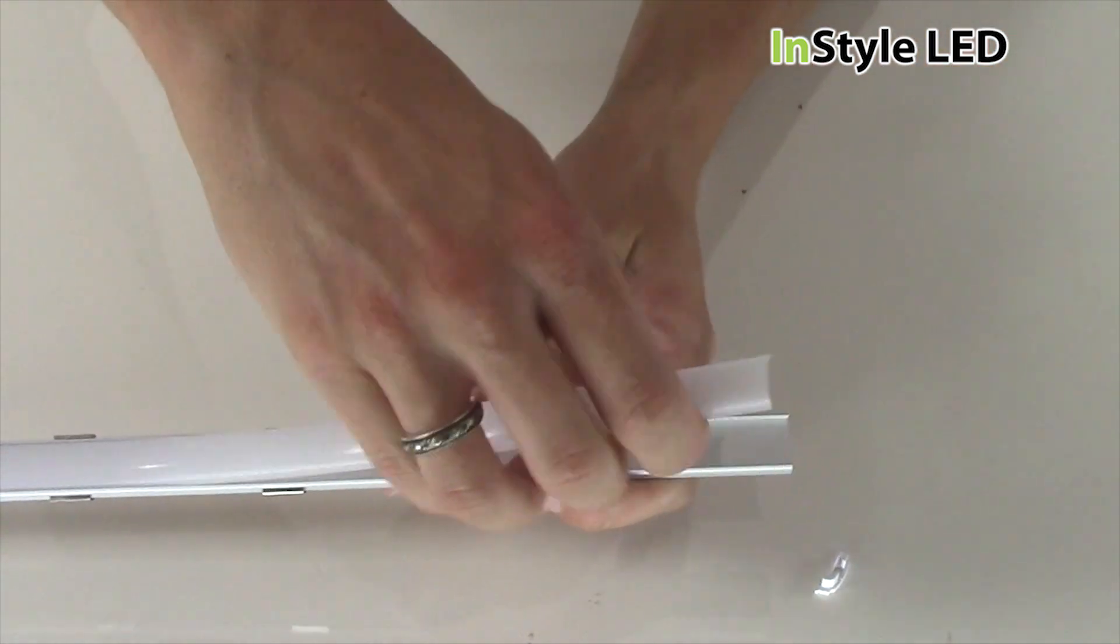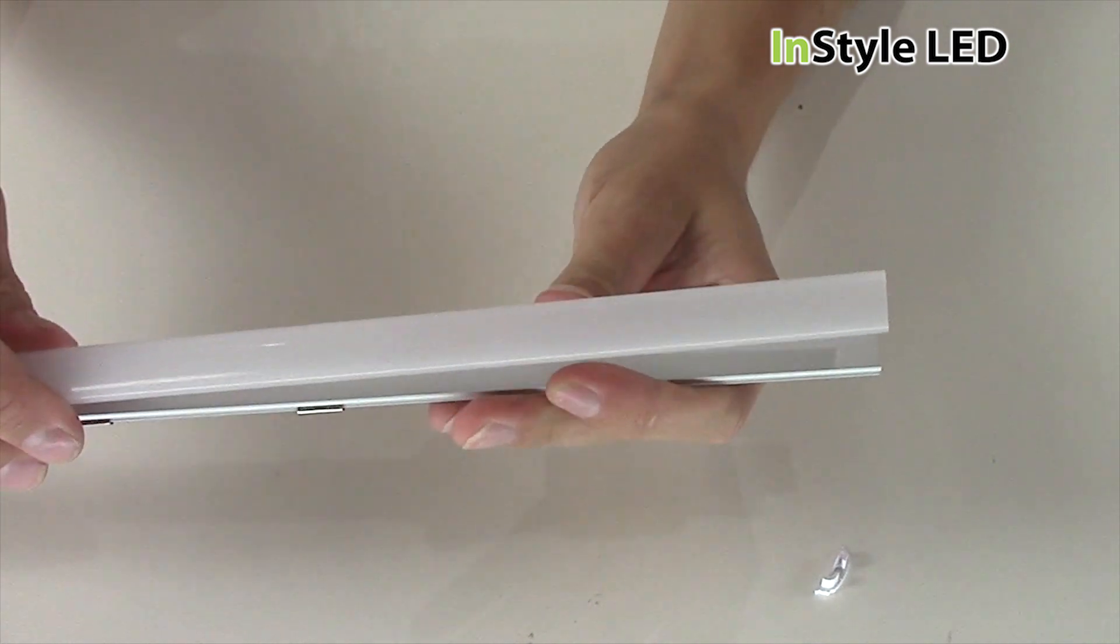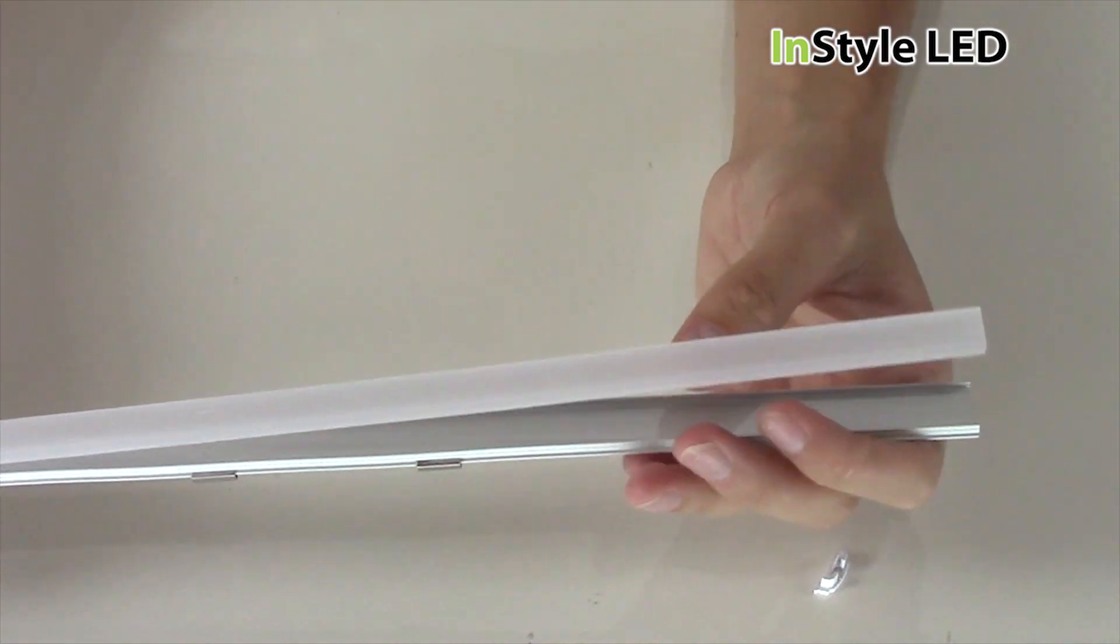The LED tape sits in the aluminium base and the diffused cover acts as the lid, hiding the LEDs but allowing the light to come through.